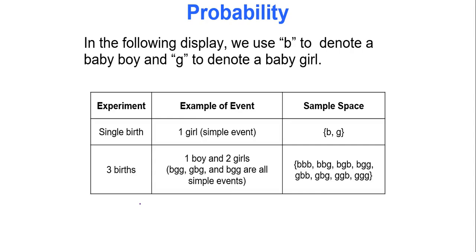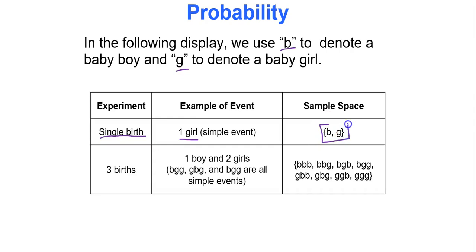What I have displayed is a table showing probability calculations about children being born — whether they're boys or girls. I use B to denote a baby boy and G to denote a baby girl. If my experiment is a single birth, an example of an event would be one girl — a simple event, because only one thing happens. Another simple event would be one boy. The sample space, or all possible outcomes, would be {boy, girl}.